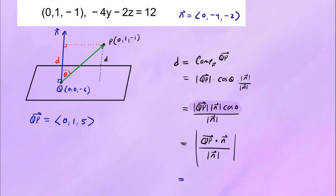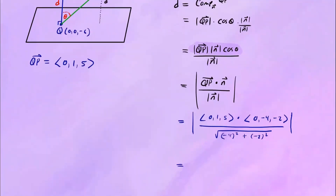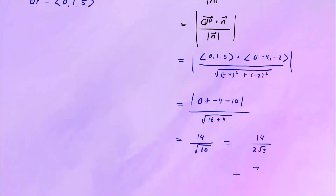So D equals the absolute value of QP dot N divided by the magnitude of N. QP = (0, 1, 5) dotted with N = (0, -4, -2), divided by the square root of 0 squared plus negative 4 squared plus negative 2 squared. The dot product gives: 0 times 0 = 0, plus 1 times -4 = -4, plus 5 times -2 = -10. The numerator is the absolute value of -14, which is 14. The denominator is the square root of 16 plus 4 = square root of 20 = 2 square root of 5. So D equals 14 over 2 square root of 5, which simplifies to 7 square root of 5. That's the distance from the point to the plane.